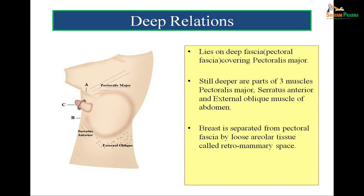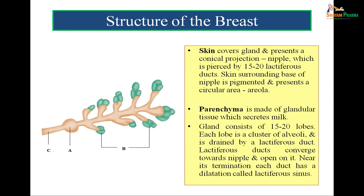We come to the relations of the breast. The breast lies in the superficial fascia of the pectoral region, and it has deep relations. Deep to the breast lies the deep fascia, referred to as the pectoral fascia. Still deeper are three muscles: the pectoralis major, parts of the external oblique muscle of the abdomen, and the serratus anterior. The breast is essentially composed of three components: skin, parenchyma, and stroma.